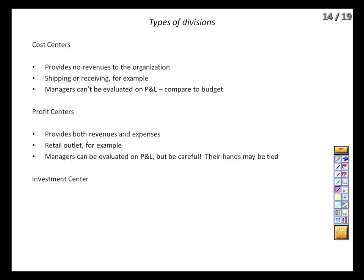Our last option is the investment center. This is a profit center that has the ability to make its own investment and reinvestment decisions. Here we're talking about a standalone subsidiary that ultimately reports to corporate headquarters but has its own executive team. So we've got General Electric, which owns GE Capital Services — essentially a great big bank. These folks are left pretty well to their own devices by GE's management team, so long as they aren't screwing things up.